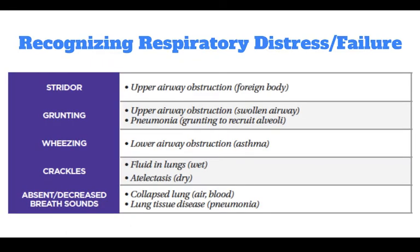When recognizing respiratory distress and failure through breath sounds: stridor signifies an upper airway obstruction or foreign body. Grunting signifies an upper airway obstruction, swollen airway, or pneumonia — grunting to recruit the alveoli. Wheezing indicates a lower airway obstruction or possibly asthma. Crackles indicate fluid in the lungs. Absent or decreased breath sounds could indicate a collapsed lung, air or blood in the chest, or lung tissue disease such as pneumonia.